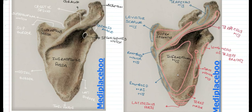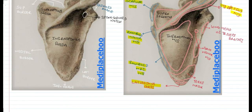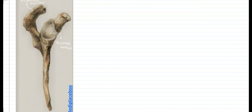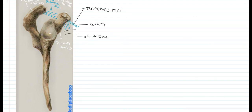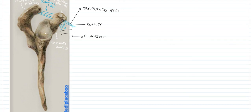On the lateral aspect of the scapula, the glenoid angle is much more prominent. Here we have the acromion process and the coracoid process. Between the two processes lies the coracoacromial ligament, which connects both processes. There is also the coracoclavicular ligament, which originates from the coracoid process and inserts on the clavicle — it has two parts: the conoid part and the trapezoid part. Additionally, the coracohumeral ligament originates from the coracoid process and attaches to the proximal end of the humerus.